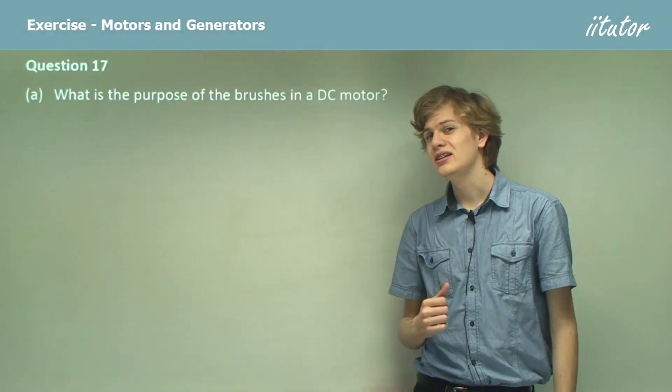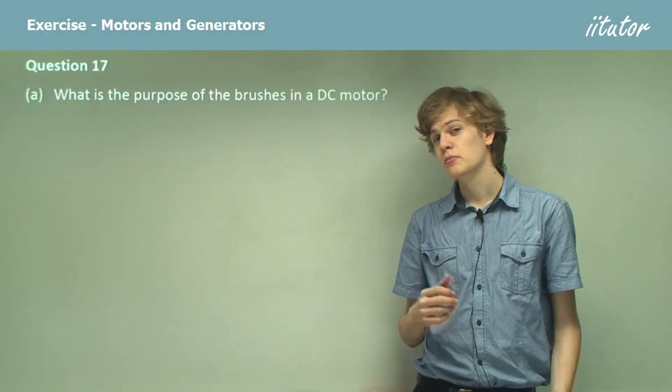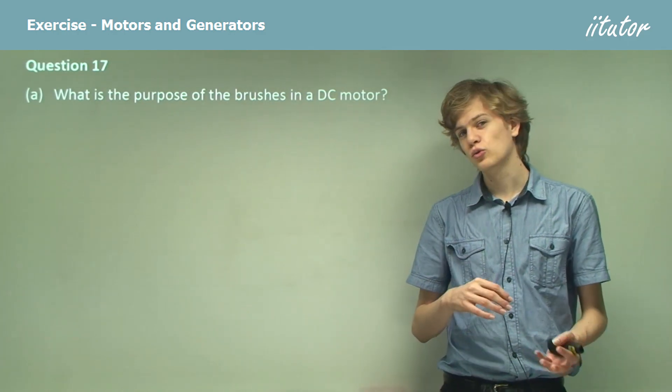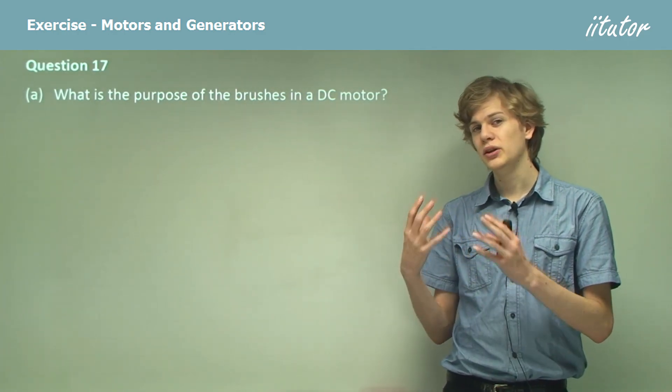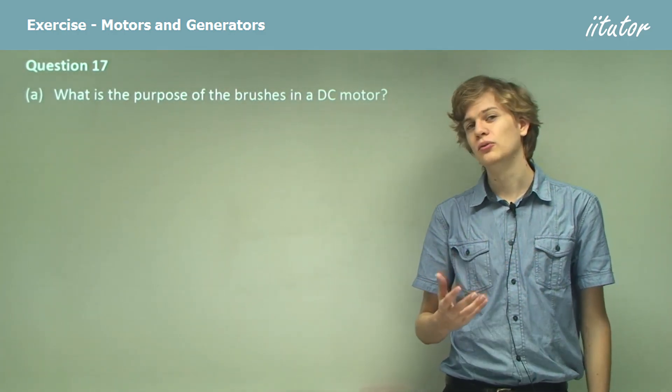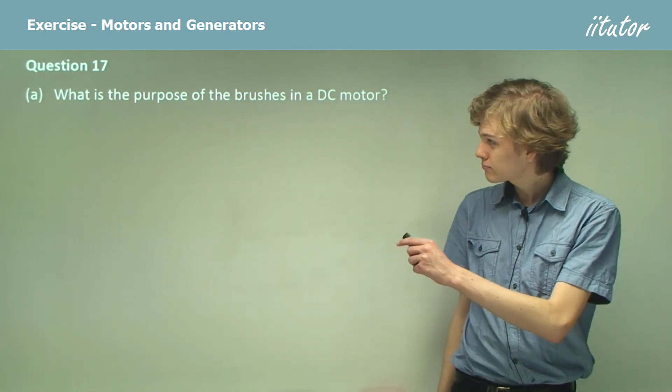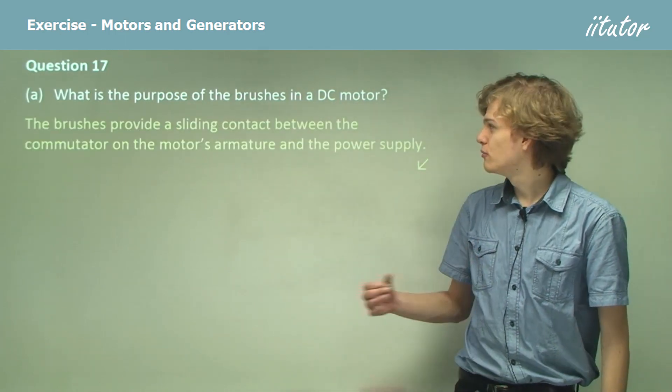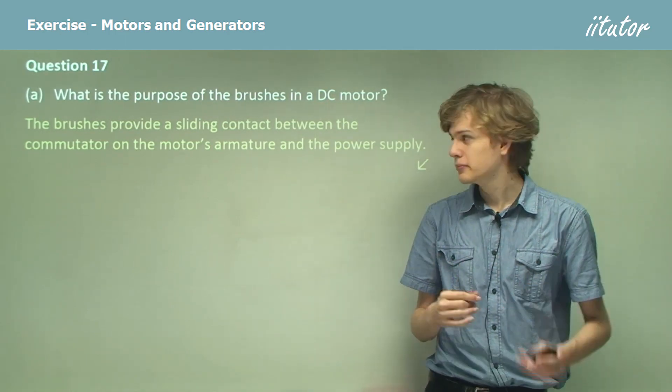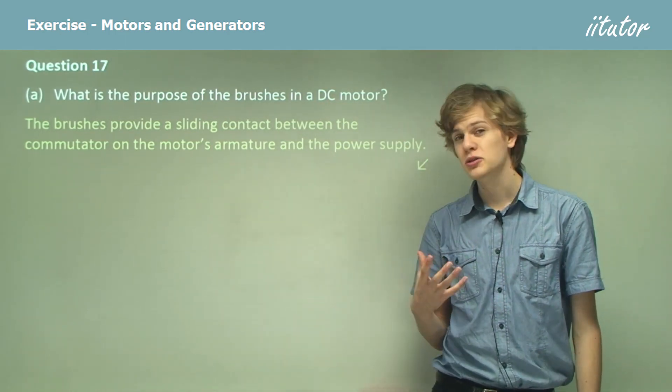What is the purpose of the brushes in a DC motor? Remember, the brushes are little graphite bits that are in contact with the split ring commutator. The brushes simply provide electrical contact between the commutator on the motor's armature and the power supply.